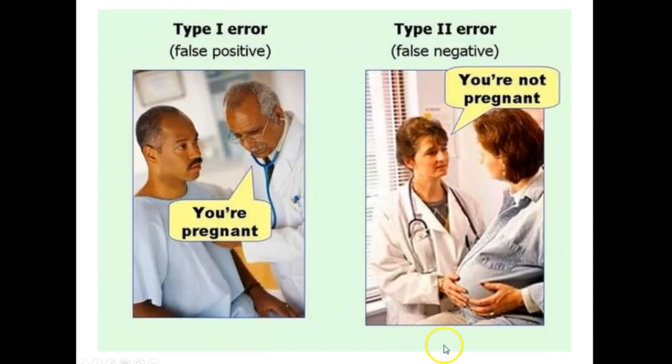On the other hand, if you're too careful, you never reject the null hypothesis, then you're going to tell someone who is pregnant they're not pregnant. That's that Type II error.